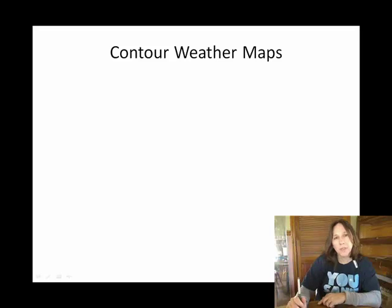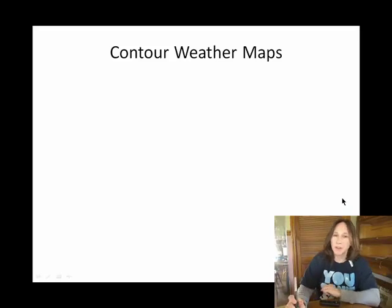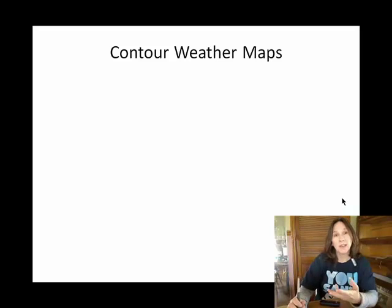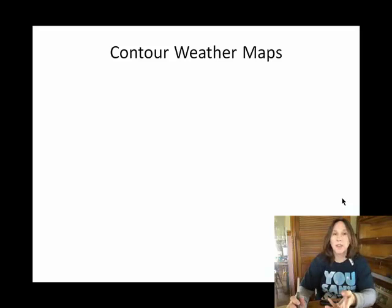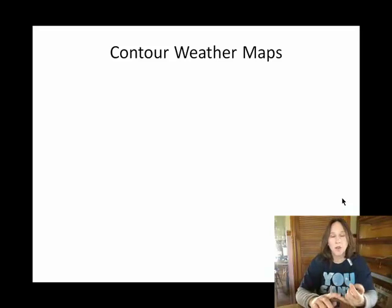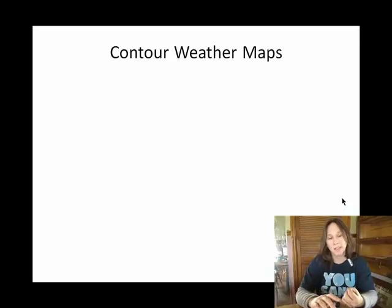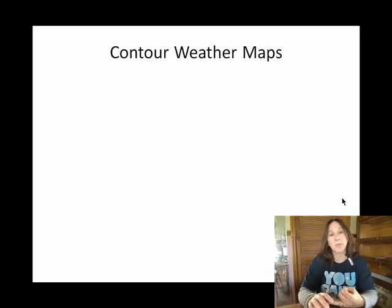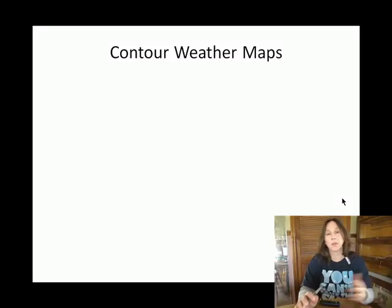If you are, like me, kind of curious about the weather, oftentimes you'll find yourself looking at weather maps, and oftentimes superimposed on these weather maps are these contour lines. Contour lines are great at showing at a glance throughout the United States where are the hot spots, what's the temperature doing, or where are the pressures high — a barometric pressure contour map.